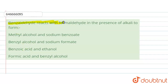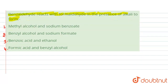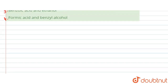The question is: benzaldehyde reacts with formaldehyde in the presence of alkali to form — we have four options given. We need to examine the reaction between benzaldehyde and formaldehyde in the presence of alkali.